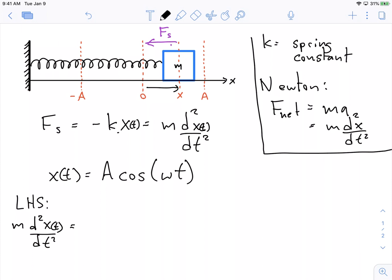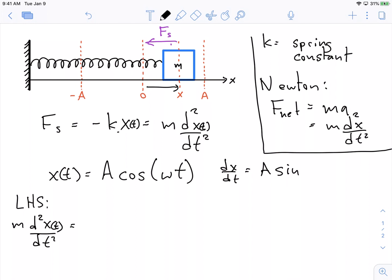I'm going to take the left hand side: m times two derivatives of x of t. If I take the first derivative, dx/dt, I get negative A sine times omega t. The derivative of cosine is negative sine. Then we do the chain rule, and the chain rule gives omega. Then the second derivative: the derivative of sine is cosine, negative times omega t. We do the chain rule again and get an omega squared on the outside.